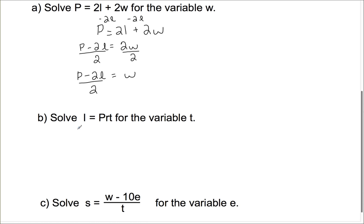The next formula: solve I equals PRT for the variable T. This formula, I equals PRT, is actually for finding interest if you know the principle, the rate, and the time for a loan. So if we want to know time, but we're given interest, principle, and rate, we need to be able to solve for that.